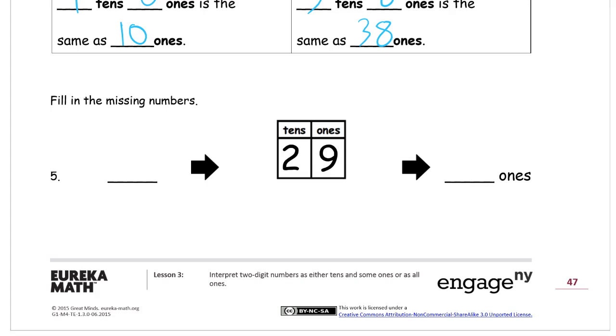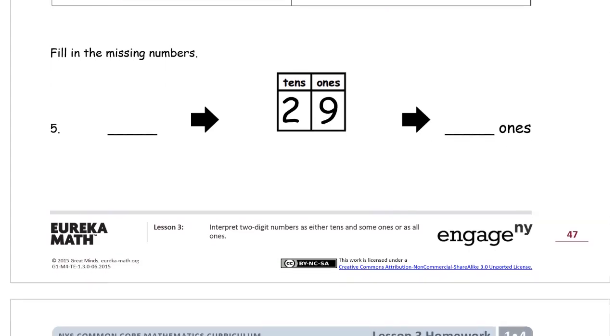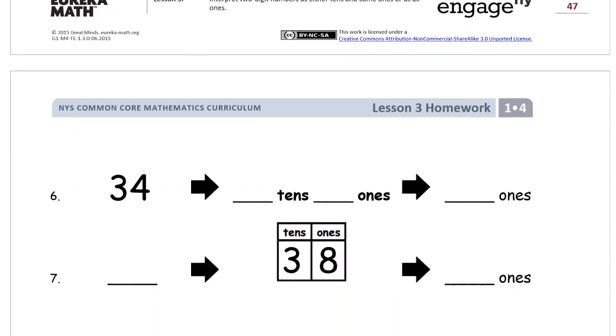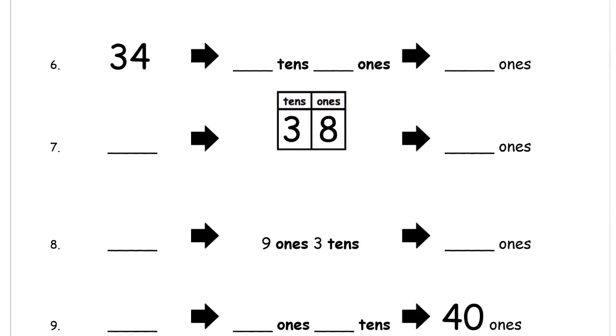And here it says fill in the missing numbers. So if you don't know what this is supposed to look like, this can be kind of tricky. But here's what you're supposed to start with. Just start with the regular way. So that's the number 29. We can see here that it's two tens, nine ones. So that's the number 29. It's two tens, nine ones, or the same as 29 ones. And we're just going to keep doing that in different order. So here's the number 34. That's three tens, four ones, or the same as 34 ones.